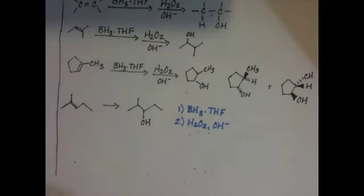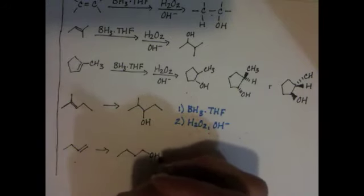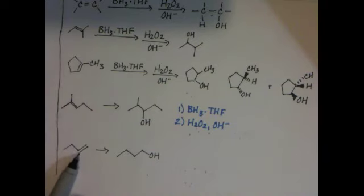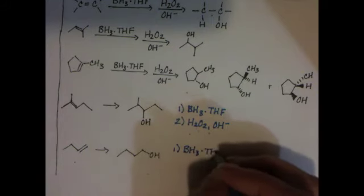Here's another example. We're doing 1-butene converted to 1-butanol. Again, we are doing an anti-Markovnikov addition. This is the most substituted carbon, but we're putting the OH group onto the other spot. So we're going to use the same reagents, BH3 and THF, followed by H2O2 and OH-.